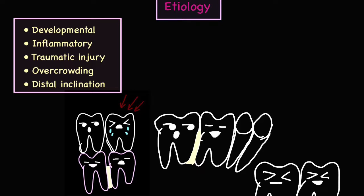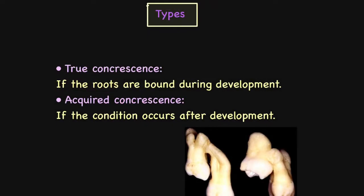Moving on to the types of concrescence. Concrescence can be divided into two types: true concrescence and acquired concrescence. True concrescence occurs when the roots fuse during the developmental stage — when the etiological factor is related to the milk tooth, either inflammatory or traumatic, this is referred to as true concrescence. Acquired concrescence obviously occurs after development, and may be caused by overcrowding or distal inclination of the crown.